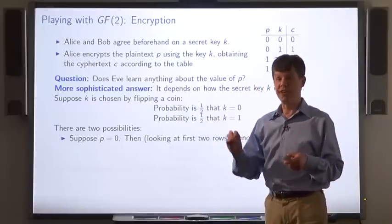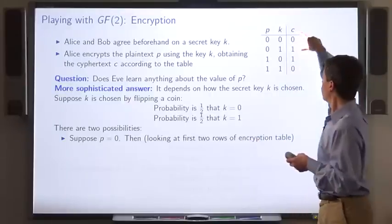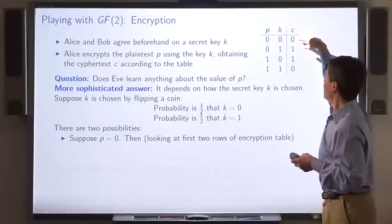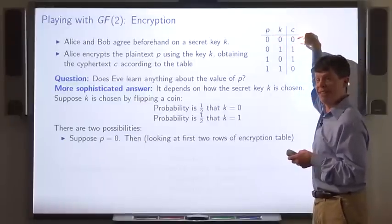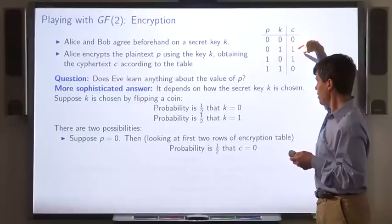Suppose the plaintext turns out to be 0. Well, the key is chosen randomly, so looking at the first two rows of the table, the probability that the corresponding ciphertext is 0 is 1/2 and the probability that the ciphertext is 1 is 1/2.